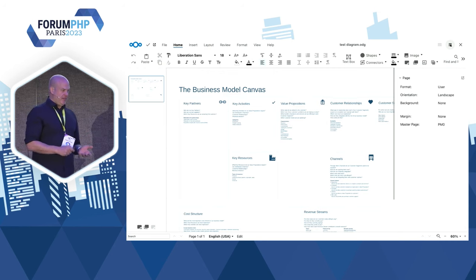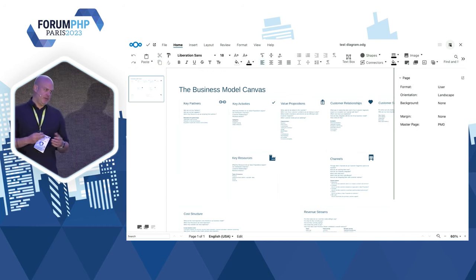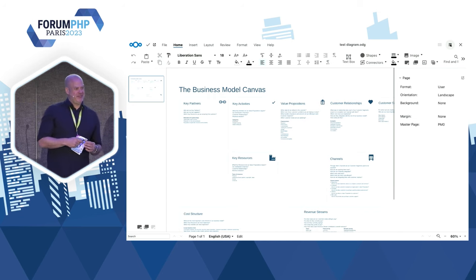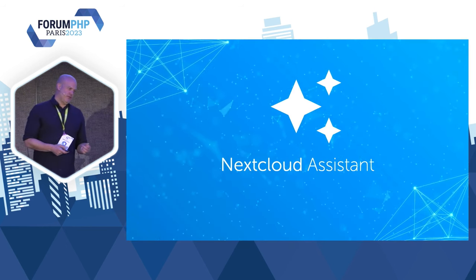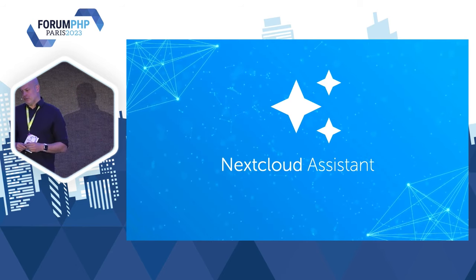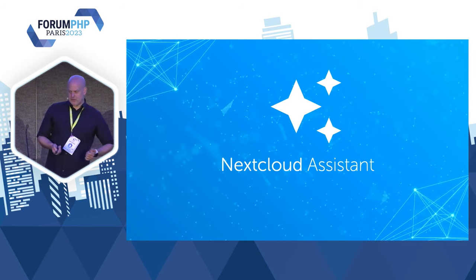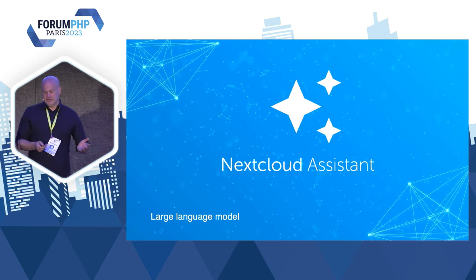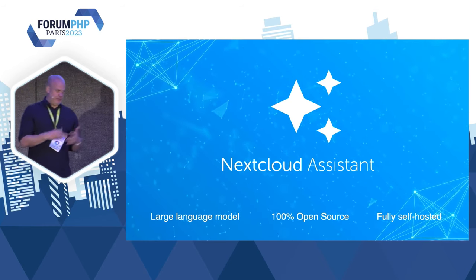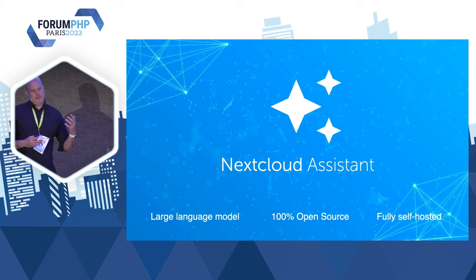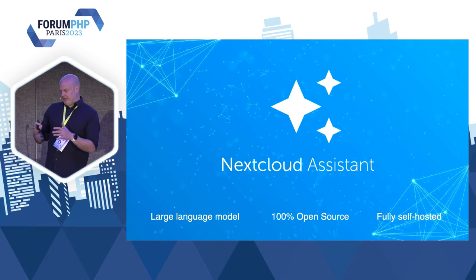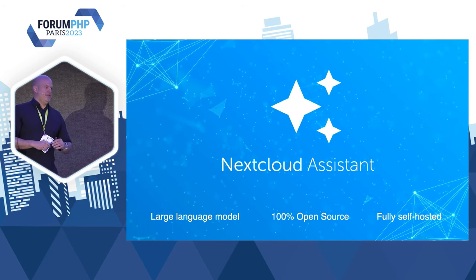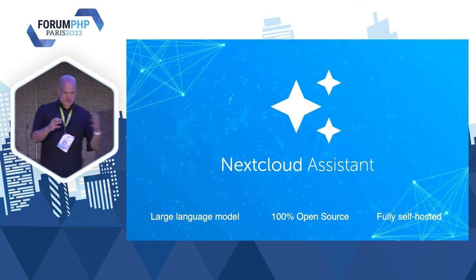We're investing a lot in AI features at the moment. The competition — proprietary cloud solutions — do the same, and we want to have a complete free open source local alternative. About three weeks ago we launched Nextcloud Assistant. It uses a large language model which works completely on your server — it even works on a Raspberry Pi — and it's 100% open source. This is quite unique because if you work with confidential data, you don't want anything leaving your machine, which is why governments and security-conscious organizations use Nextcloud.